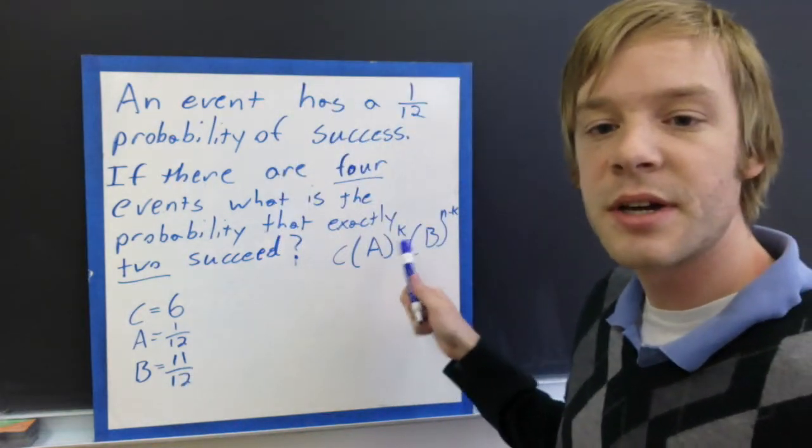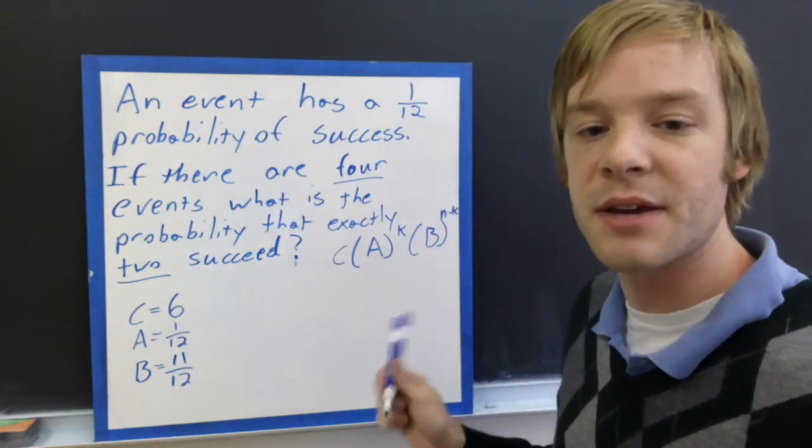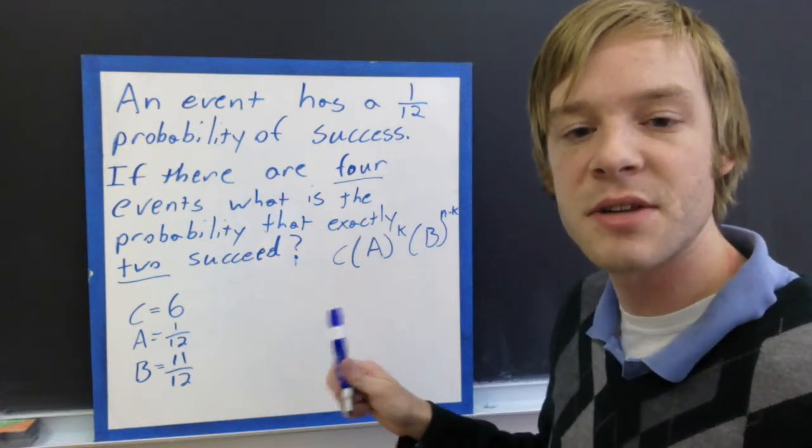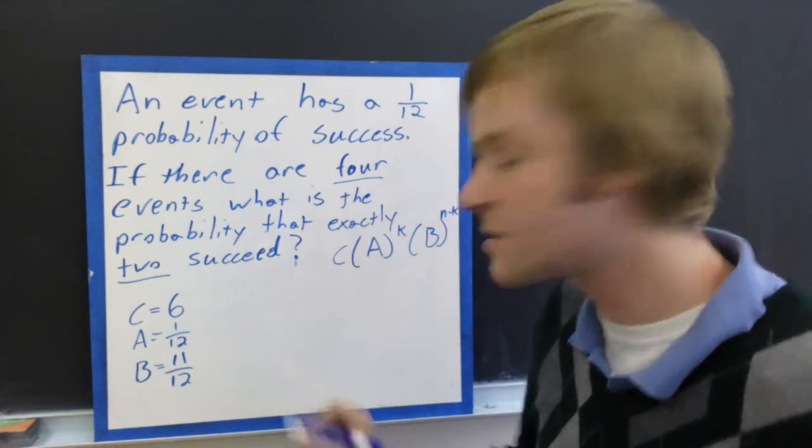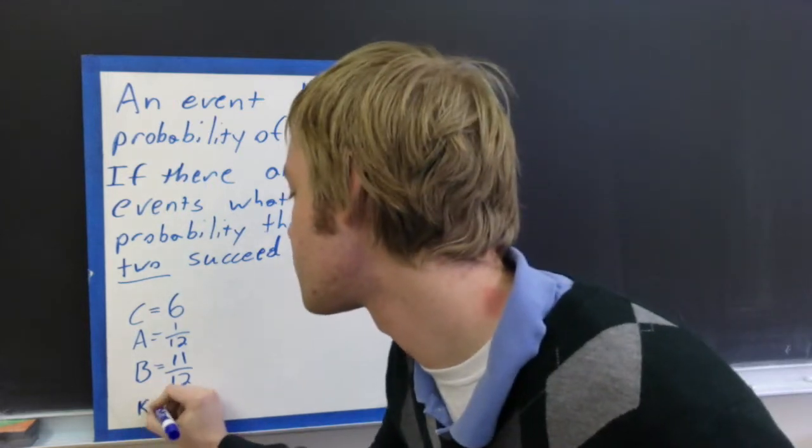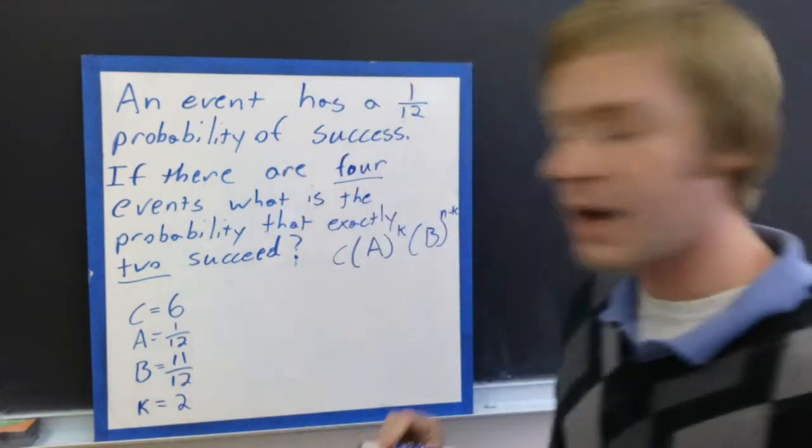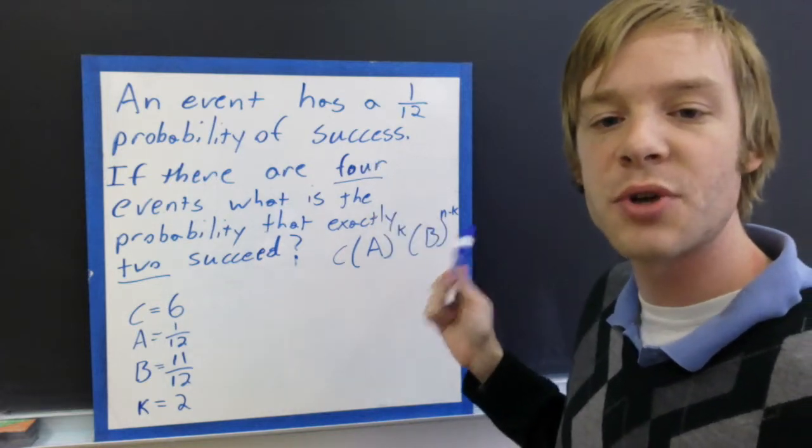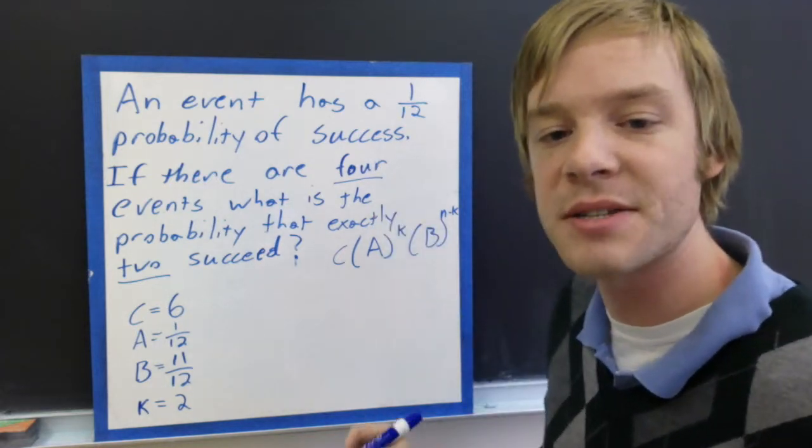Lastly, we need k and n minus k. We know that k is the number of successes, so we need 2 successes, and n is our total number. So 4 is our total number of events, so n is equal to 4.